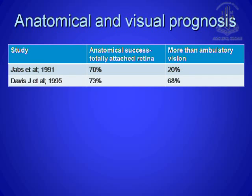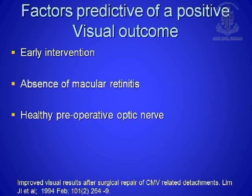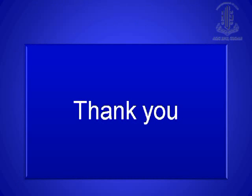For anatomical and visual prognosis, it is good that we can reattach at least 70% of retinas in these cases. The Jabs et al. study was before HAART therapy — only 20% ambulatory vision. But once HAART started, almost up to 70% of patients are getting good ambulatory vision. Factors predictive of positive visual outcomes are: early intervention, absence of macular retinitis, and a healthy preoperative optic nerve. Thanks.